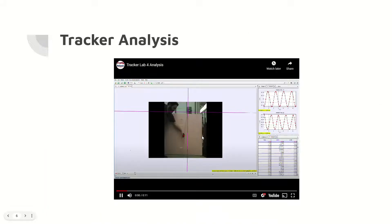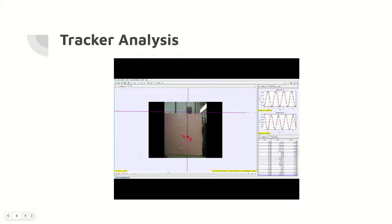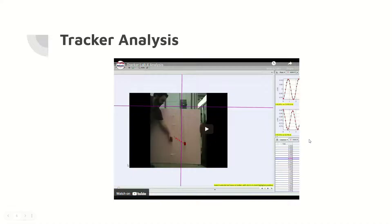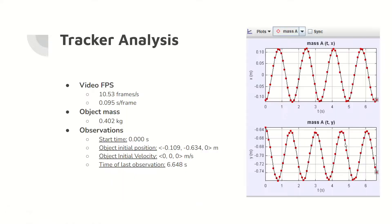The tracker analysis of the oscillating motion of the mass on the spring. The position of the mass in the x and y axes is tracked and stored in a table. This table was then placed in an Excel file and converted to a CSV file for model analysis. The tracker analysis shows that the mass of the object is 0.402 kilograms, that there are 0.095 seconds per frame, the change in time, and the object's initial position.